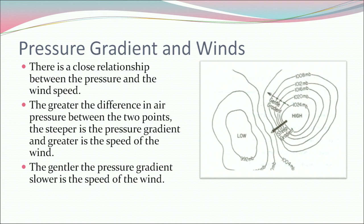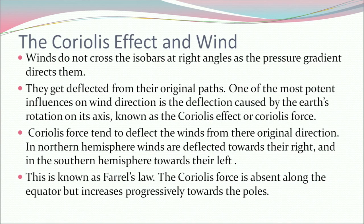The gentler the pressure gradient, the slower the speed of the wind. Regarding the Coriolis effect: winds do not cross the isobars at right angles as the pressure gradient directs — they get deflected from their original paths. One of the most potent influences on wind direction is the deflection caused by the earth's rotation on its axis, known as the Coriolis effect or Coriolis force. In the northern hemisphere winds are deflected towards their right, and in the southern hemisphere towards their left. This is known as Ferrell's law. The Coriolis force is absent along the equator but increases progressively towards the poles.